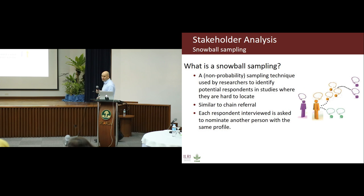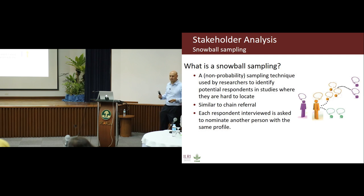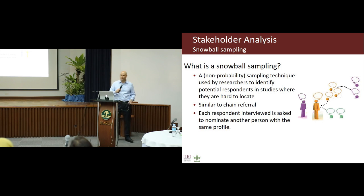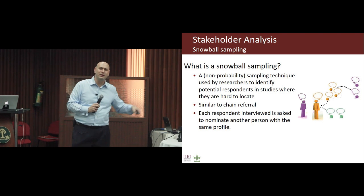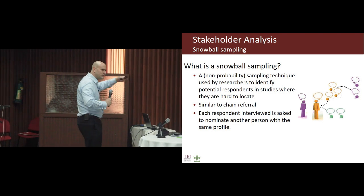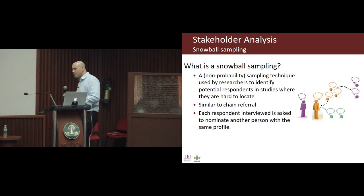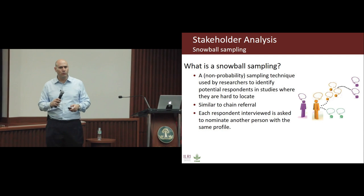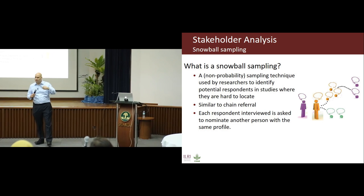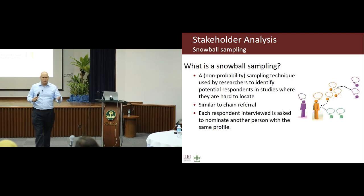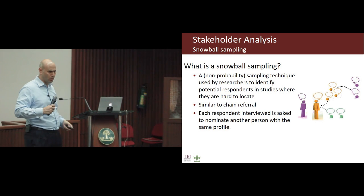Snowball sampling is a technique used when it's hard to find the target people. Once you find one person, you ask, 'Do you have a colleague like you who I can also talk to?' The probability is that if you find one person of your target audience, they will know another. So you get to the first, then second, and from there further participants. For example, if looking for active farmer representatives, chances are they know others. If you find a private sector representative concerned about corporate social responsibility, she might know another.